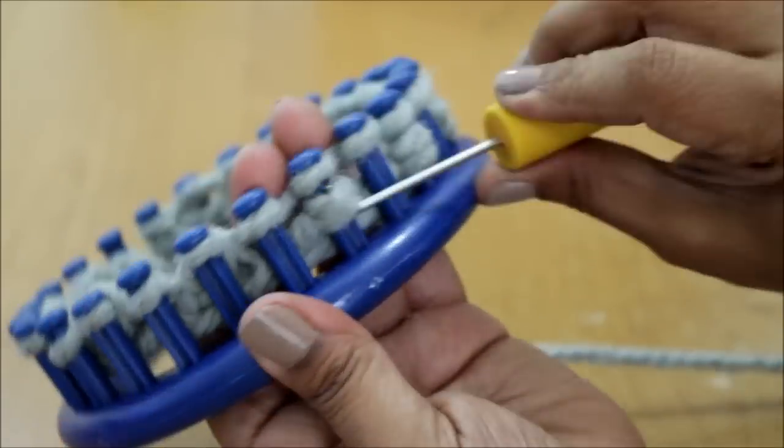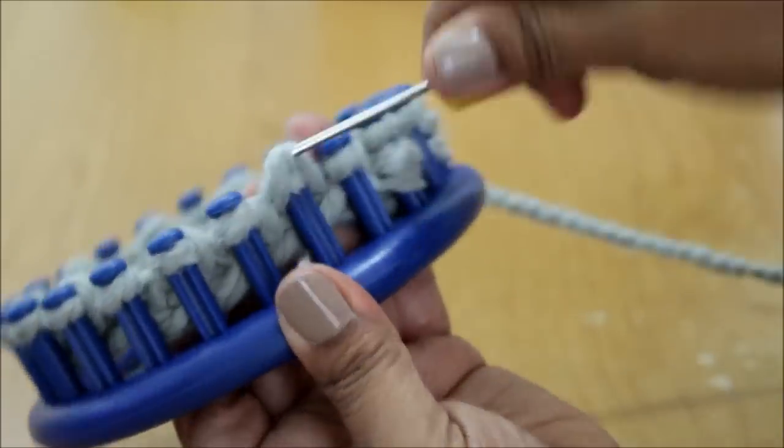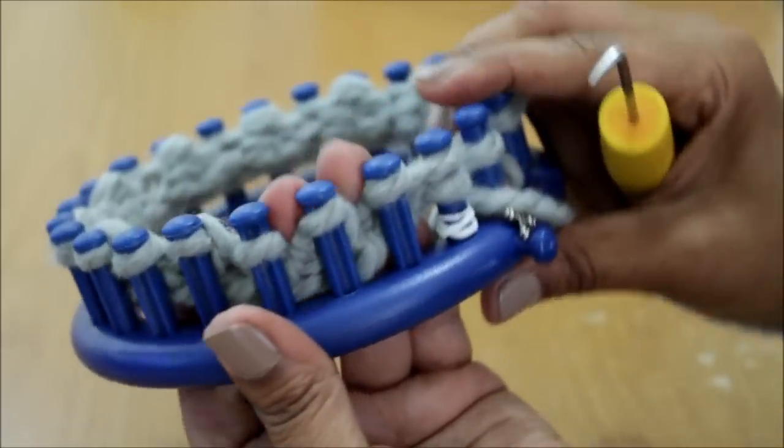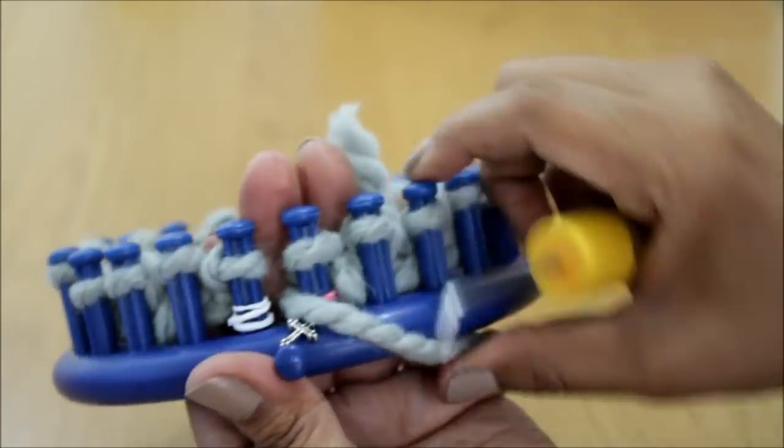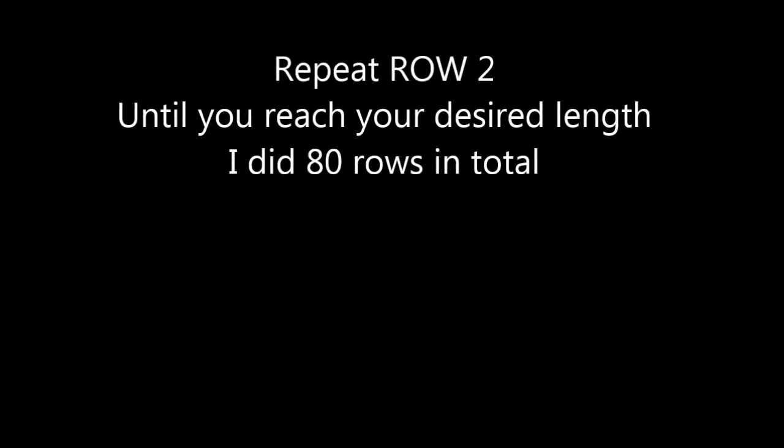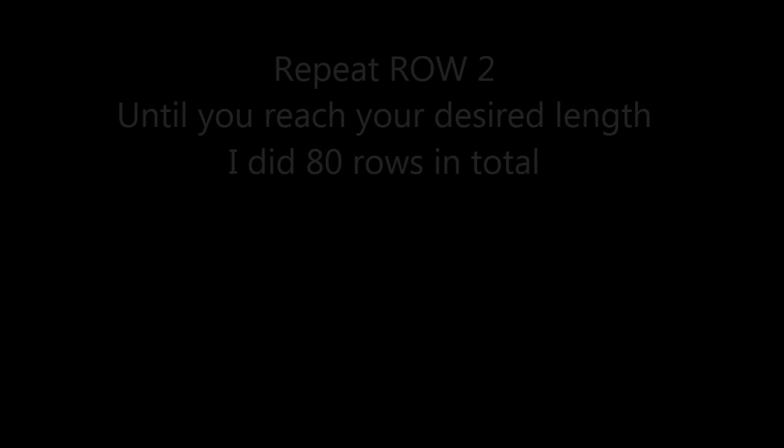When you're done with that, you are done with row two. And at that point, all you're going to do after you knit off this last peg is repeat row two as many times as you'd like. I did a total of 80 rows and then just start again.